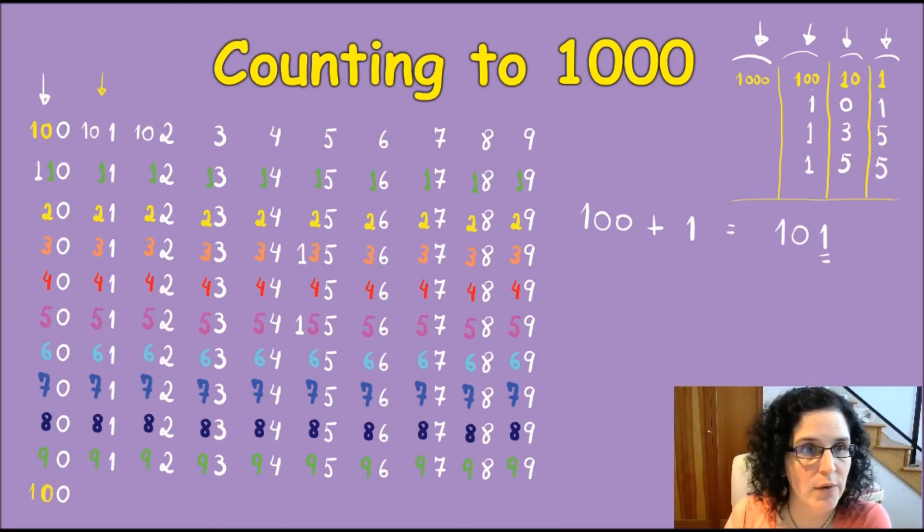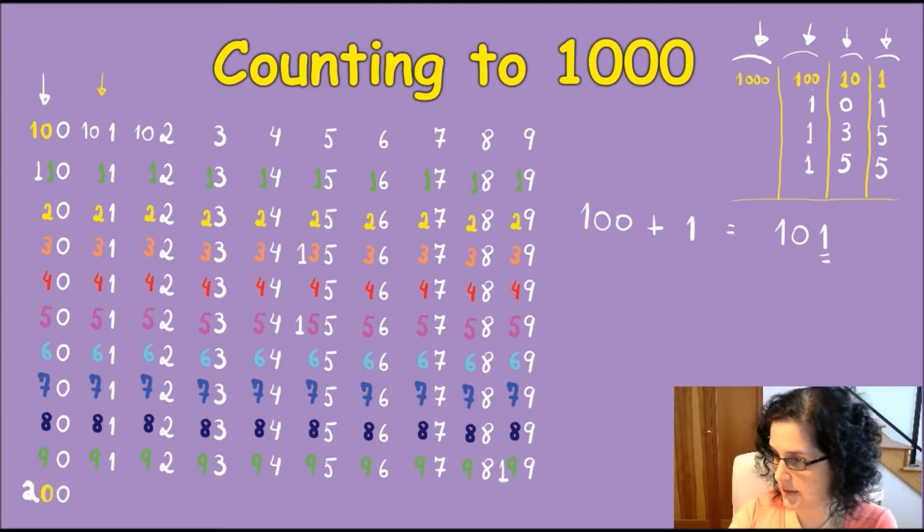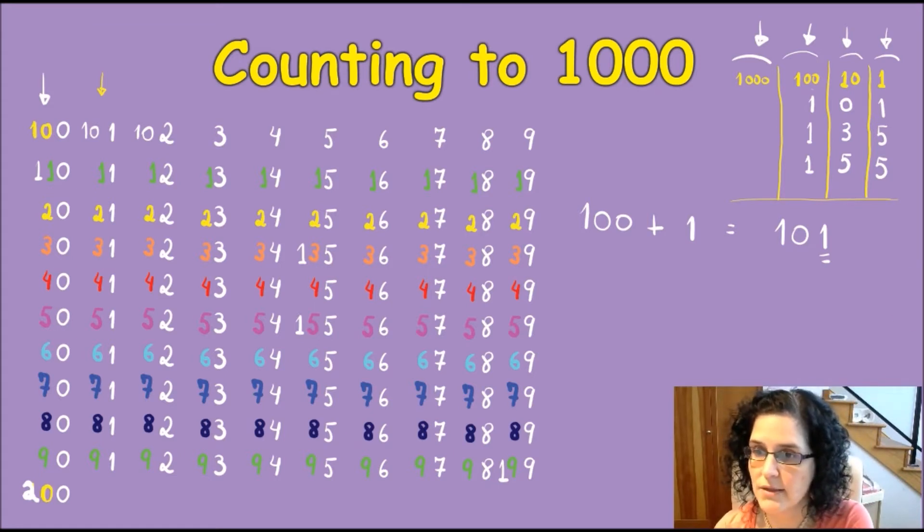When you get down here and you are 199, this one here becomes 200, and then you go on, and it just keeps going on and on. Now, what is 1,000 going to look like?